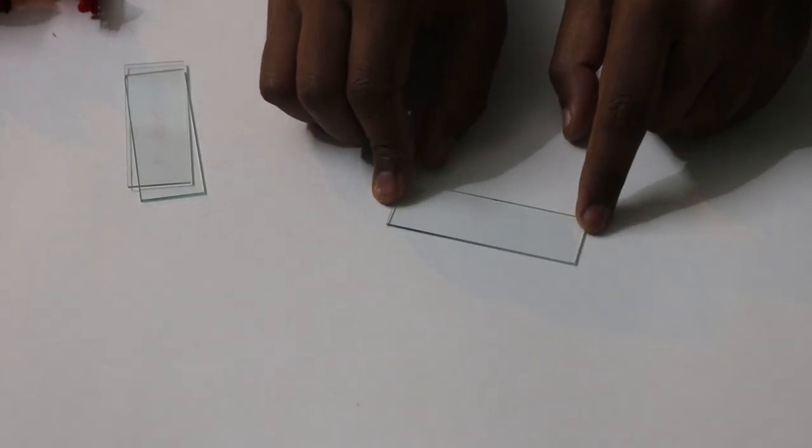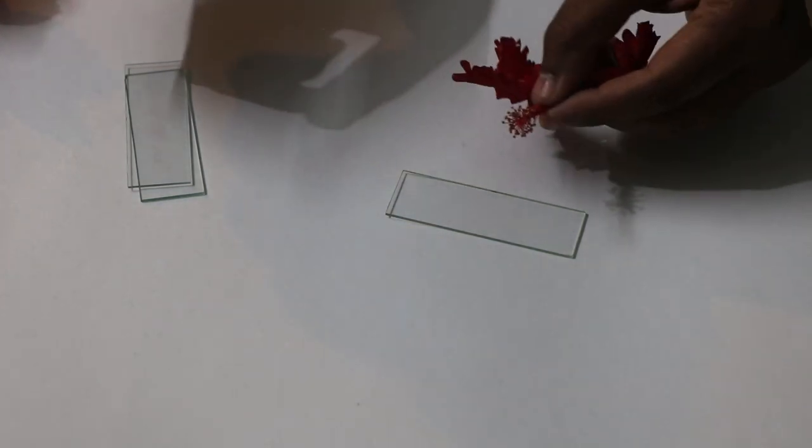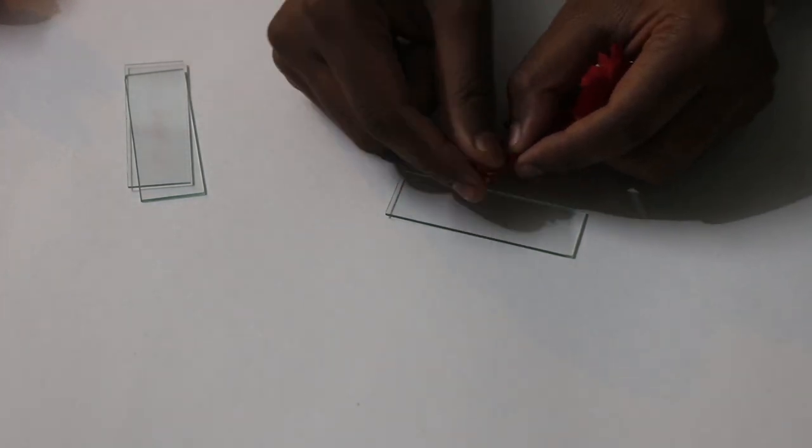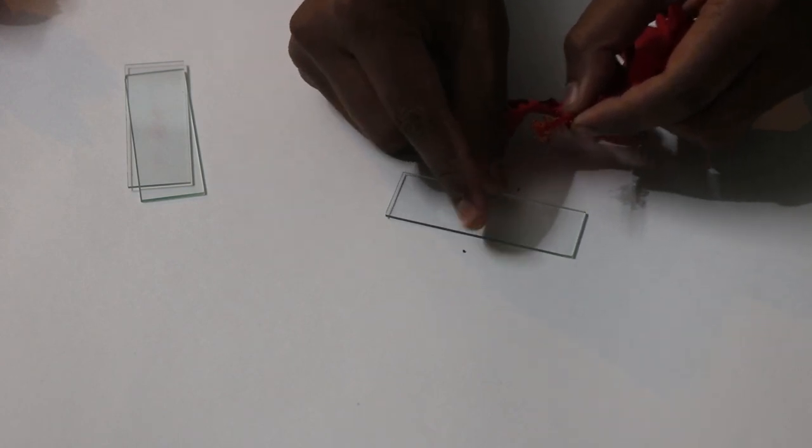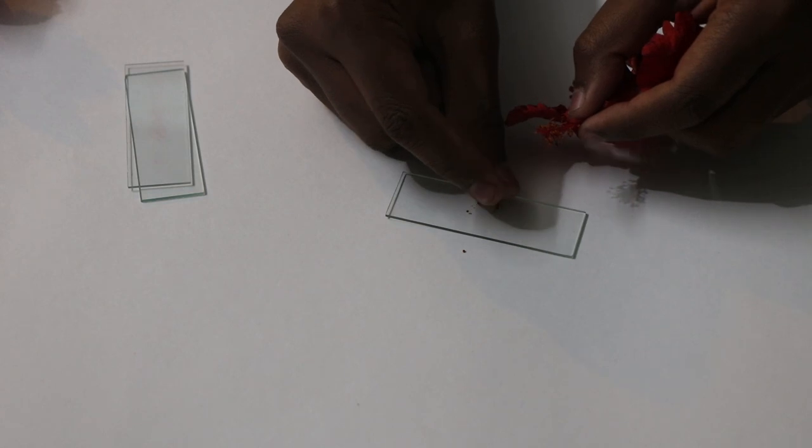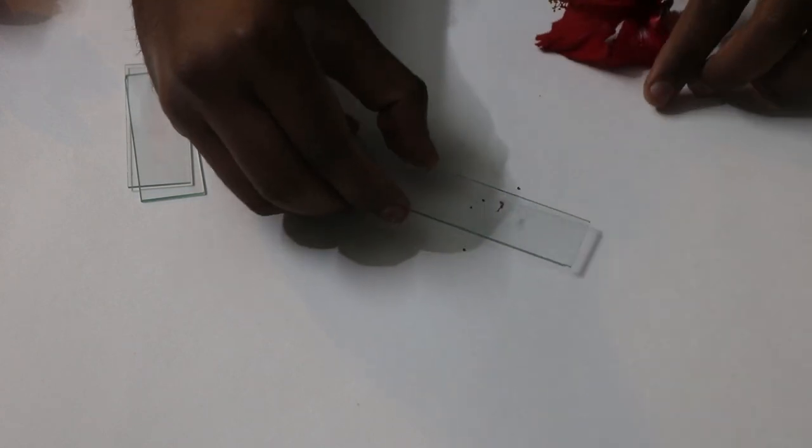Now take the glass slide and sprinkle some pollen grain on it. Here you can see I have also added some anther with pollen grain.